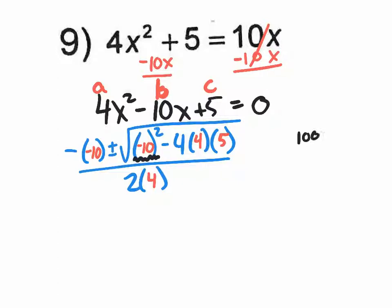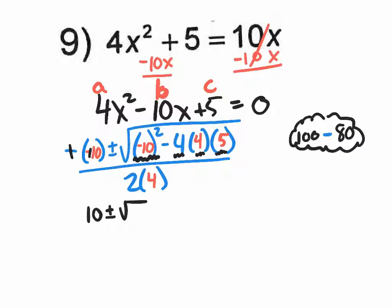Let me jot down 100. Over on the other side, what is four times four? That's sixteen, and sixteen times five is eighty. So what we really have is 100 minus 80. The discriminant is 100 minus 80, which is 20. So what we really have is positive ten plus or minus the square root of twenty, divided by two times four, which is eight.